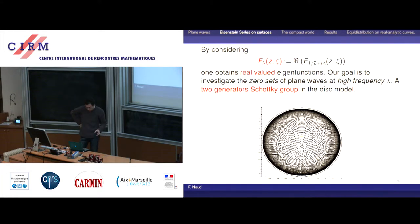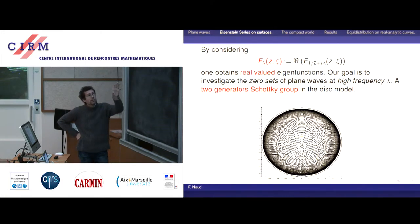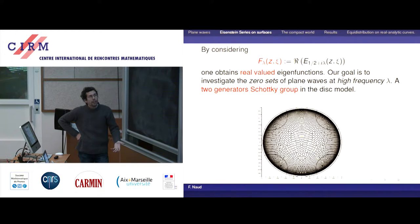It's a very mixed picture. You see clearly a very regular behavior at infinity, where it's almost all horocyclic. And then in the compact part of the surface it really looks like what you get when you look at a genuine L² eigenfunction.